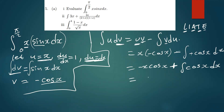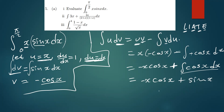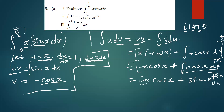We copy this expression: negative x·cos(x). The integral of cos(x) gives sin(x), so we have plus sin(x). Since this is a definite integral with limits, we apply the upper limit π/2 and lower limit 0 to both terms.